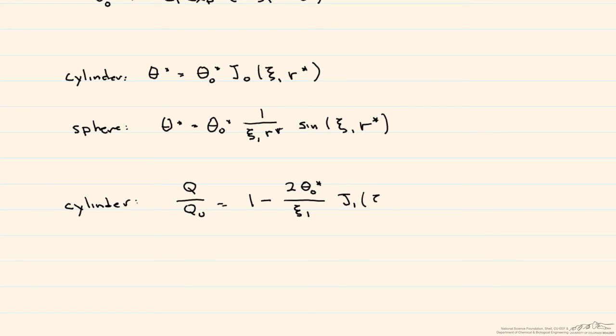And for a sphere, we get the ratio of our q divided by q0 is equal to a slightly more complex 1 minus 3 times this theta zero star divided by the eigenvalue times the eigenvalue times the cosine of the eigenvalue. And this whole thing is multiplied by the sine of the eigenvalue minus the eigenvalue times the cosine of that eigenvalue.